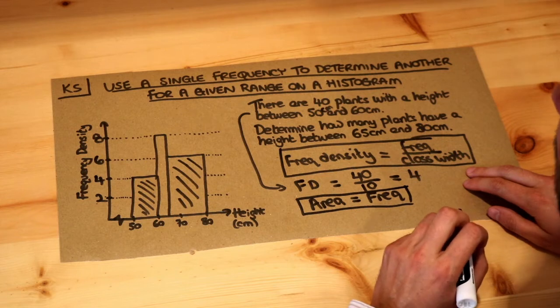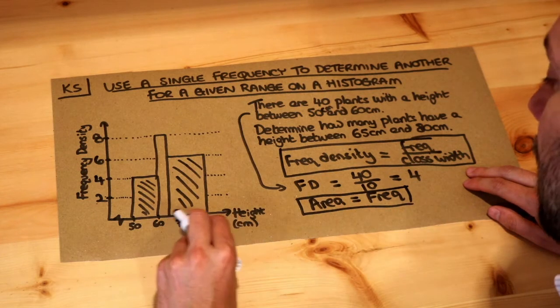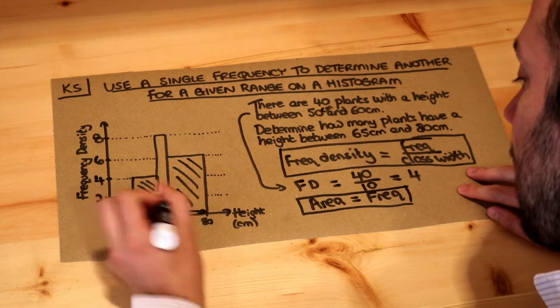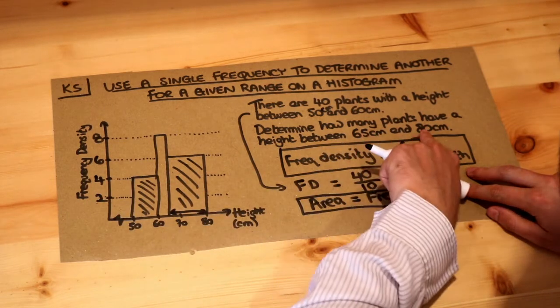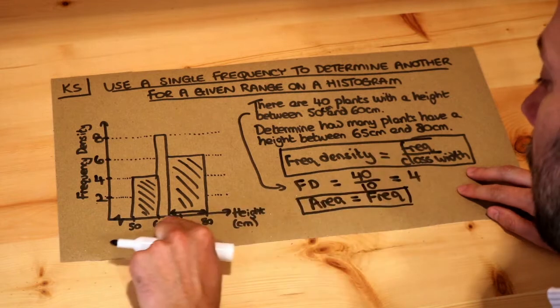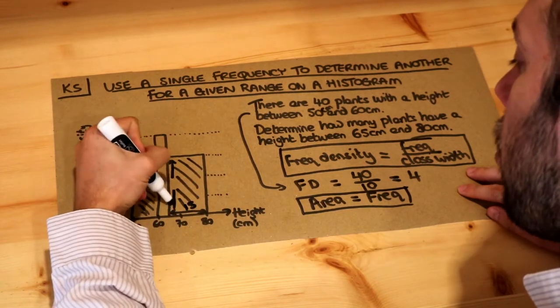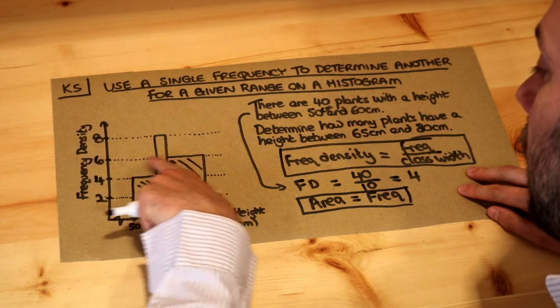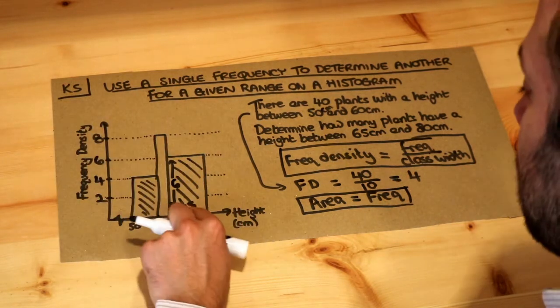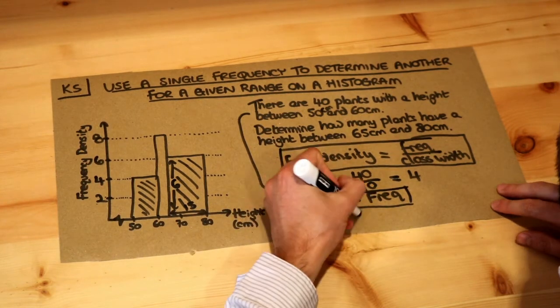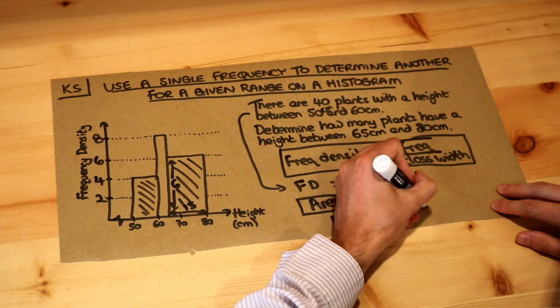This is only applicable to histograms, but the area of the bar gives you the frequency represented by that bar. So for 65 to 80, what's the area of this bar? Well, the width of this rectangle, 65 to 80—that's a width of 15, isn't it? So we've got a width of 15, and the height we now know because we now know the scale. The top of this bar is at 6, so we just have to do 6 times 15, which is 90.